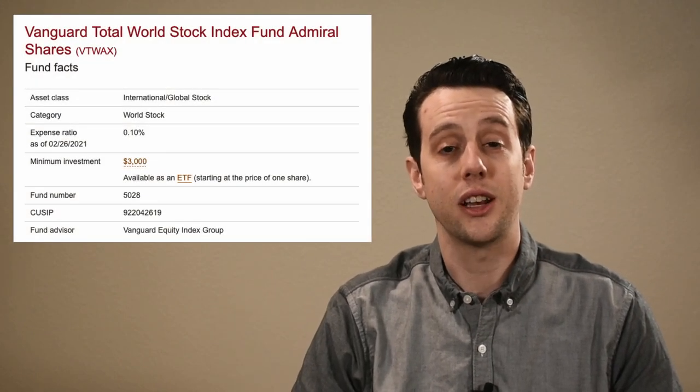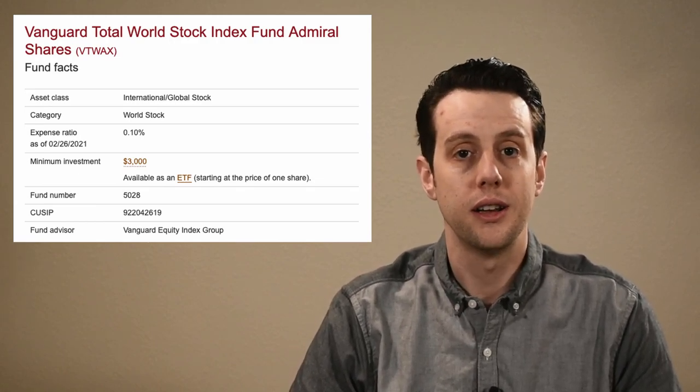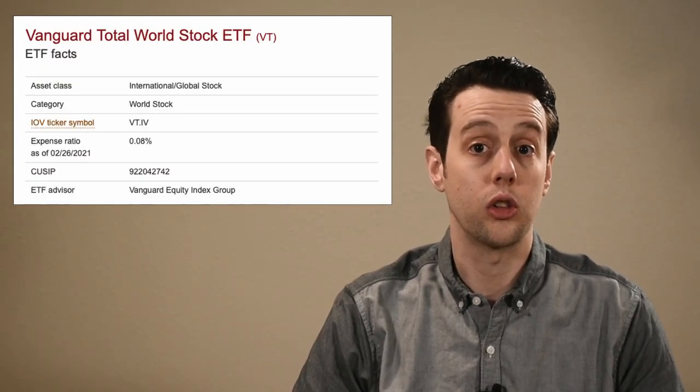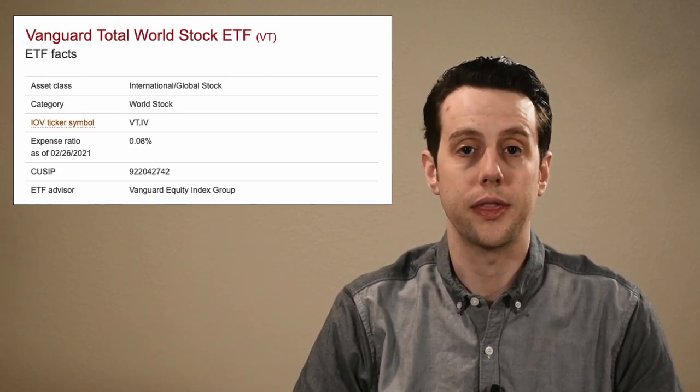The mutual fund version, VTWAX, has an expense ratio of 0.1%. This is the fee Vanguard takes out of your returns to pay for the cost of running the fund. This works out to $1 per year for every $1,000 invested. The ETF version costs a little less at 0.08% or $0.80 per year for every $1,000 invested. This is a phenomenal deal to buy and manage nearly 9,000 stocks in 49 markets and dozens of currencies.